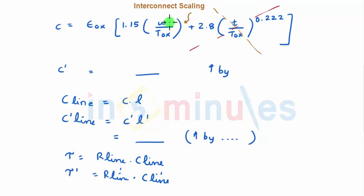We know that width is not changed. Oxide thickness is reduced by a factor of s. So if I divide by s, s will go up. That means C' would be s times C.